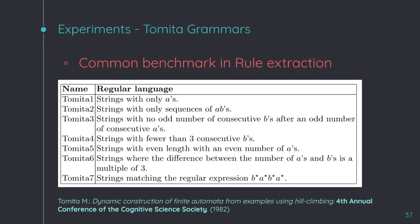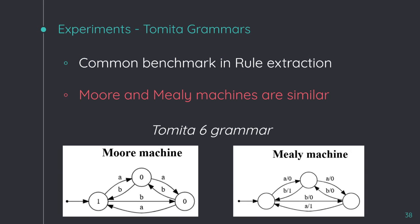The Tomita grammars are seven regular languages that are a common benchmark in rule extraction. These languages are built under the alphabet A, B, and their deterministic finite automata have no more than six states. An interesting point of these grammars is that the Moore and the Mealy machines have no differences in their states. This is an example of the Moore machine on the left side and the Mealy machine on the right side for the Tomita 6 grammar.